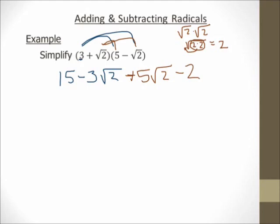At this point I can just combine like terms. I have 15 and negative 2, so 15 minus 2 is 13. Then I combine negative 3 square root of 2 plus 5 square root of 2 — they are like radicals with the same index and same radicand — so negative 3 plus 5 is positive 2 square root of 2. Final answer: 13 plus 2 square root of 2.